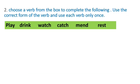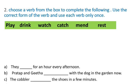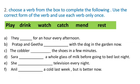The next exercise: choose a verb from the box to complete the following. Use the correct form of the verb and use each verb only once. Children, can you see the green box? The verbs are: play, drink, watch, catch, mend, rest. These are the verbs. For each question, we need to choose the appropriate verb.